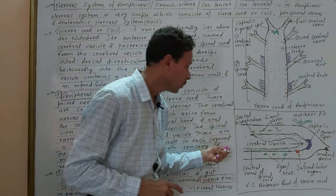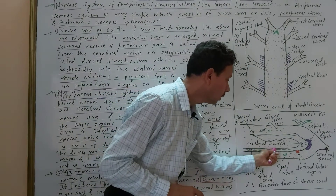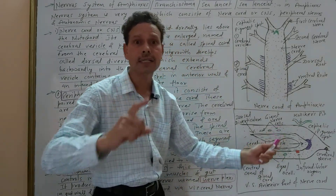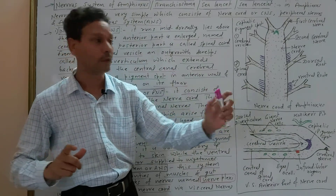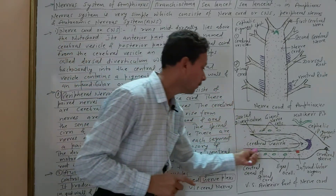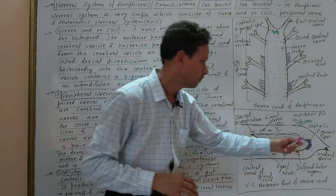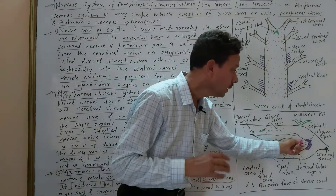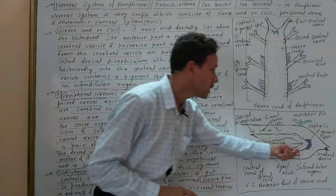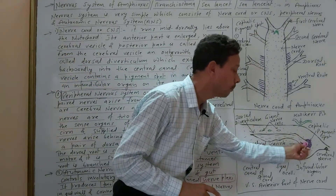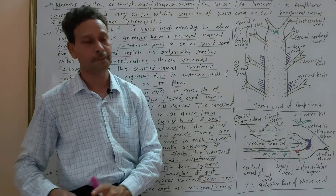The nerve cord has a central canal filled with cerebrospinal fluid, and that fluid collects in the cavity of the cerebral vesicle. This cavity of the cerebral vesicle is the ventricle — a single cavity present in the brain of Amphioxus.